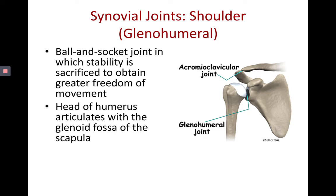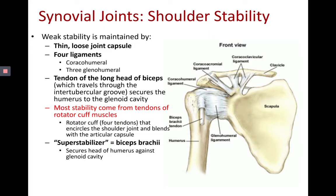The glenohumeral shoulder joint is a ball and socket, multi-axial joint where the head of the humerus fits in the glenoid cavity of the scapula. It is probably one of the most freely movable joints because it has a very shallow socket and a thin, loose joint capsule. What holds the shoulder together is primarily the tendons of the rotator cuff muscles, with the tendon of the bicep brachii acting as the super stabilizer.